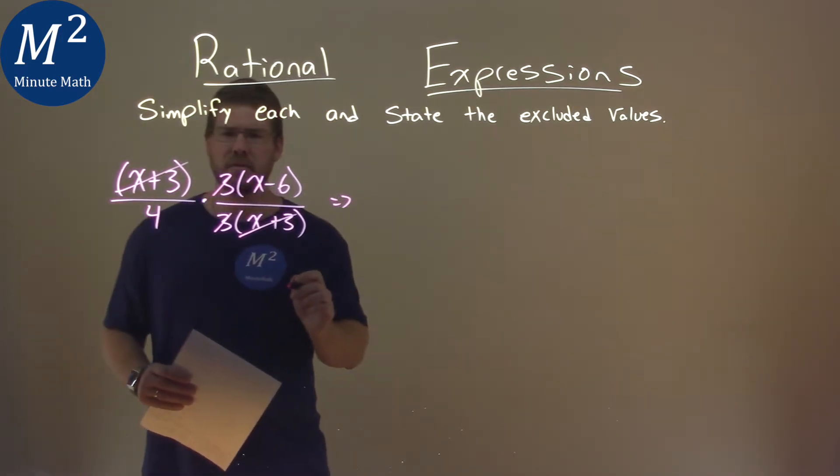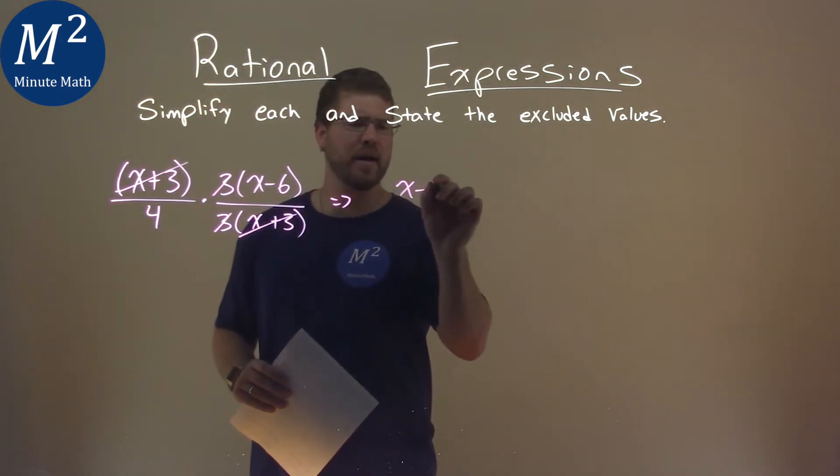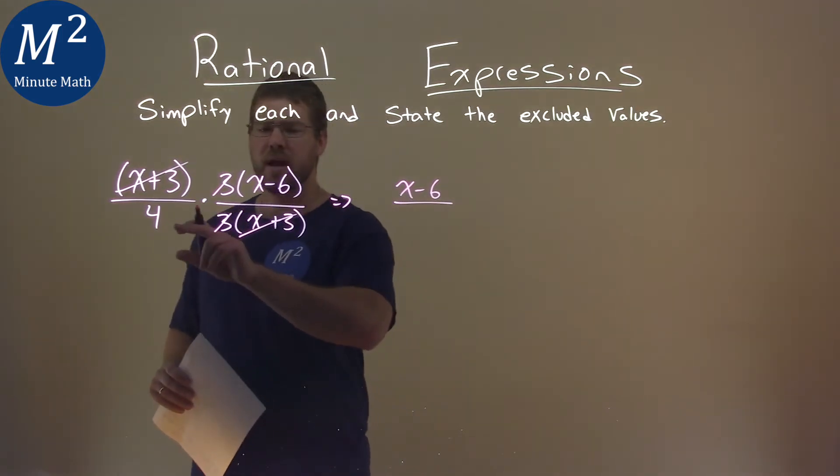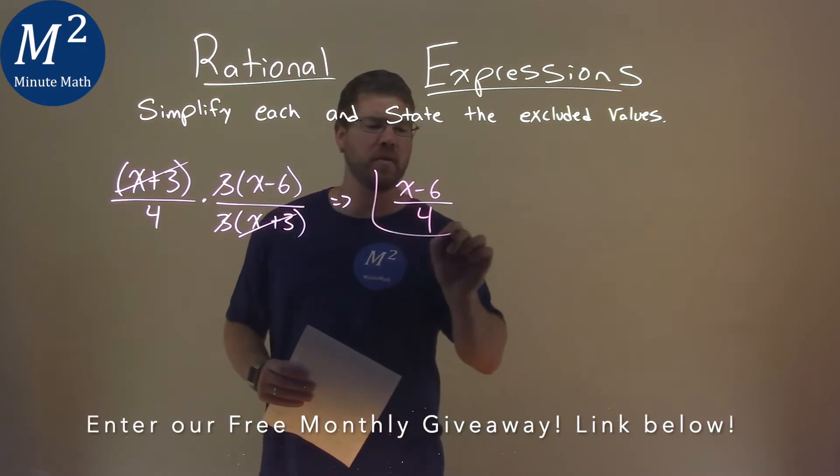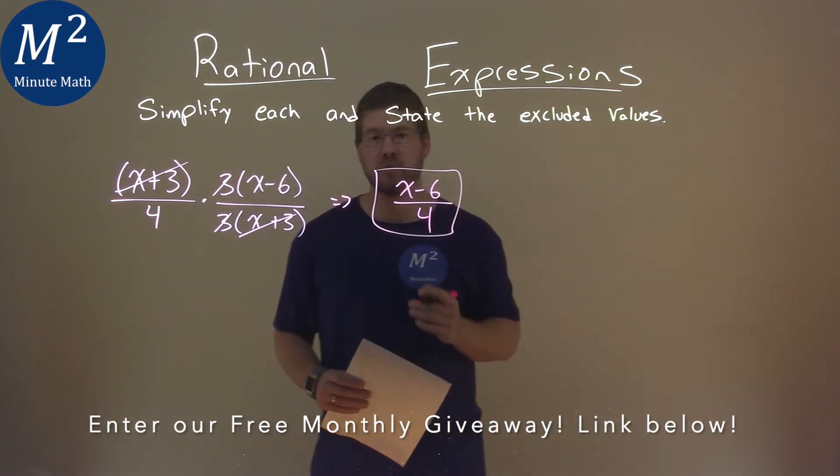So what are we left with? Just the x minus 6 in the numerator, and the denominator is just 4. We can't simplify anymore, so this is our simplified expression.